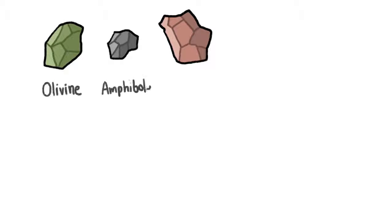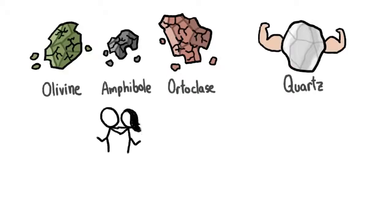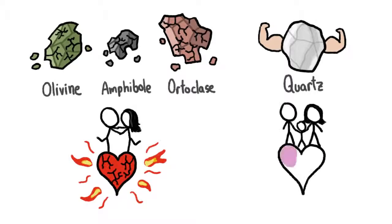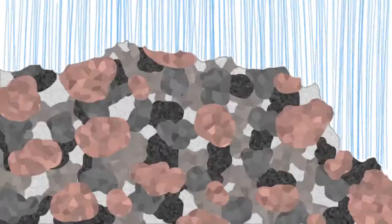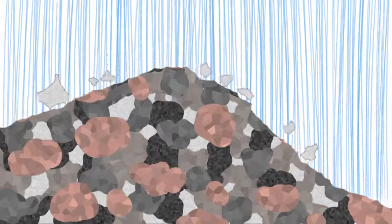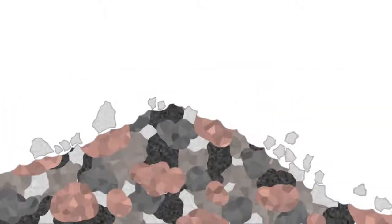Minerals that do form in the earlier, hotter conditions have weaker chemical structures and weather away more easily than quartz, kind of like how a relationship forged in the heat of passion might not be as stable as a deep bond developed over time. So as the weak, flash-in-the-pan minerals wear away, the unfaltering quartz grains are left to pop out of the rock as sand.